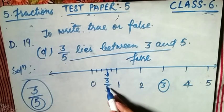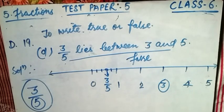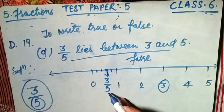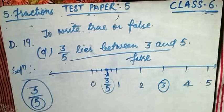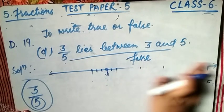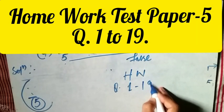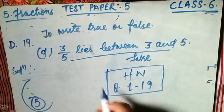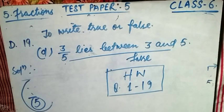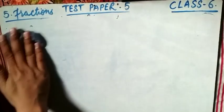I hope that is clear. The point 3/5 is represented near 0 on the number line, while 3 and 5 are far away, so 3/5 does not lie between 3 and 5 — this statement is false. Your homework is to complete all questions 1 to 19 of test paper 5. These questions are based on previous knowledge. I hope you understand. Have a nice day.